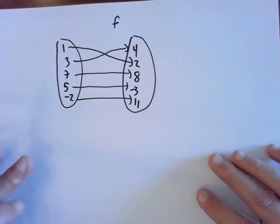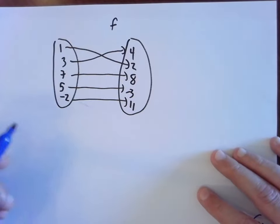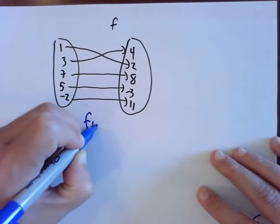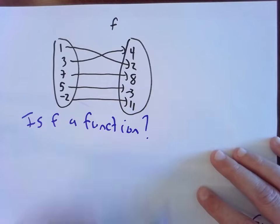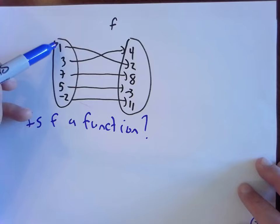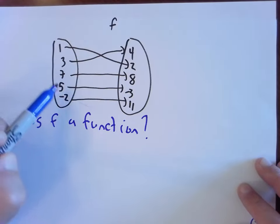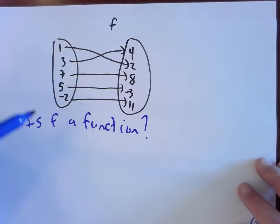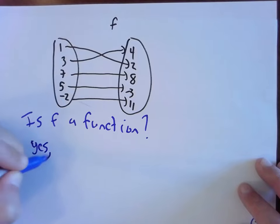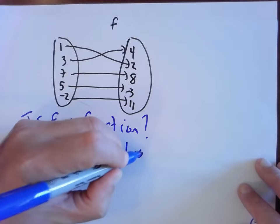The first question we want to ask is: does this picture that I've called f represent a function? Is f a function? The question is, does every input over here have a line going over to exactly one output? Does every input have exactly one output? And the answer here is yes. F is a function. Every input has exactly one output.